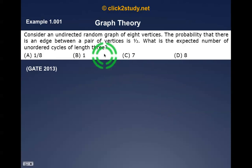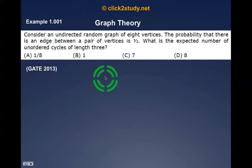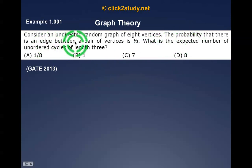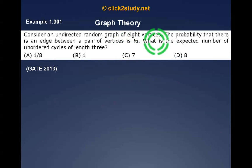Let's take our first example from graph theory. Consider an undirected random graph of 8 vertices. The graph is random, meaning any edge could exist or not exist. The probability that there is an edge between any pair of vertices is 1/2. We don't know whether there is an edge between any two vertices, so we say the probability of existence of that edge is 1/2. What is asked is: what is the expected number of unordered cycles of length 3?